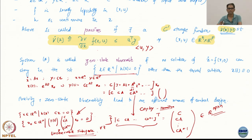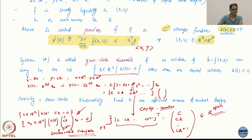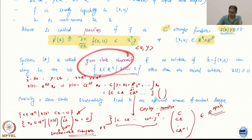So, two important definitions: passivity — which we have not yet connected to linear systems, it's a general property of systems — and zero state observability, which we have connected to observability of linear systems.